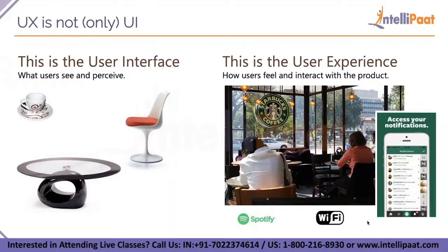In simple terms: everyday objects like a cup, saucer, chair, or table in a restaurant can be considered UI elements. But the whole experience — how soon the coffee arrives, its taste, how the waiter speaks to you, the brand's trustworthiness, the air conditioning — all together constitute user experience. The small individual things are UI; the complete experience is UX.